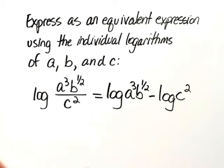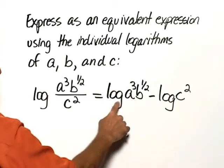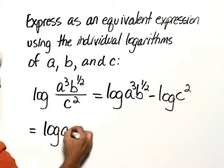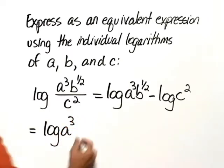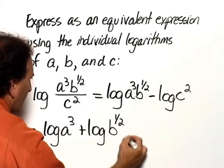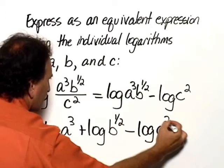Now we'll use the product rule, which is the log of a product is equal to the sum of each of the individual logarithms. So this would be the log of A cubed plus the log of B to the 1 half, and we still have minus the log of C squared.